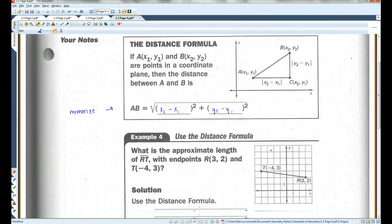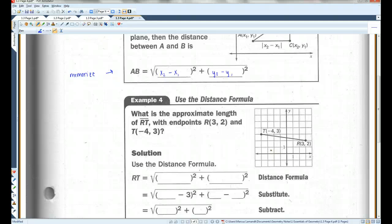So let's do an example. What is the approximate length of RT with endpoints 3, 2 and negative 4, 3? Basically, just plug them in. It doesn't matter which one you make your X1, Y1, X2, Y2. I'm just going to do it like this. This is X1, Y1. This is X2, Y2. The distance formula. Once again. X2 minus X1 squared plus Y2 minus Y1 squared. Square root.